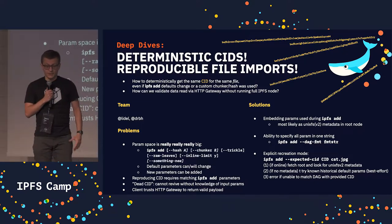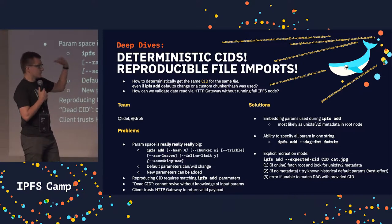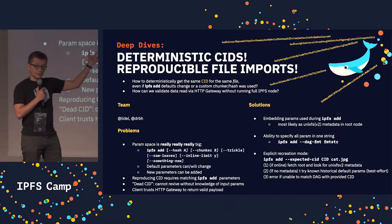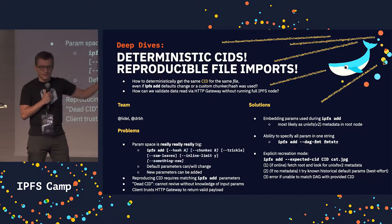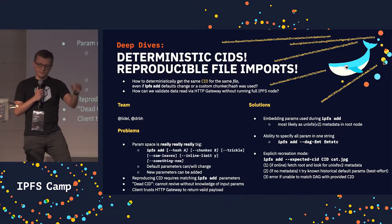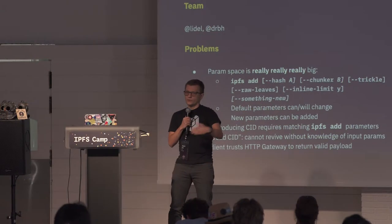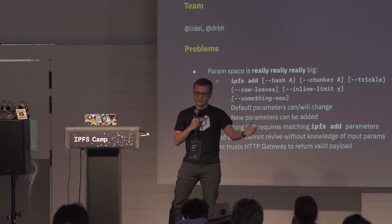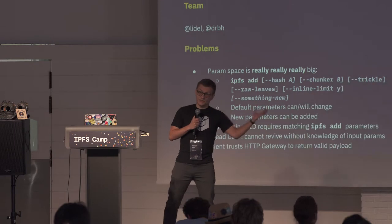I should be able to do that by either fetching the root node, looking for the root node in the DHT or other discovery methods, and checking the UnixFS metadata for that parameter space. If not, we know what the historical defaults were, and we try those.